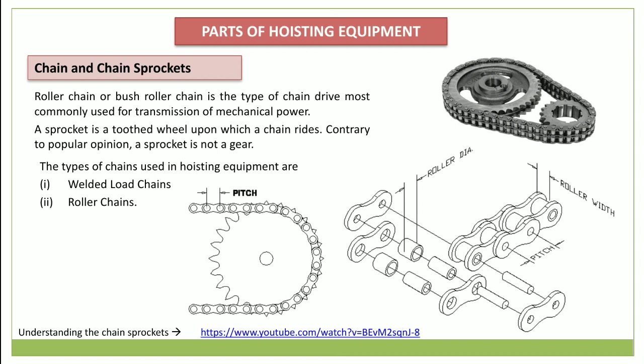A sprocket is a toothed wheel upon which the chain rides. Contrary to popular opinion, a sprocket is not a gear. Chain types are identified by different numbers — for example, a number 40 chain, where the rightmost digit is zero for standard dimension chains, one for lightweight chains, and five for rollerless bushing chains. The roller diameter is the nearest binary fraction to five-eighths of the pitch, and the pin diameter is half the roller diameter. The width of a standard chain is the nearest binary fraction to five-eighths of the pitch, and for narrow chain it is 41% of the pitch.